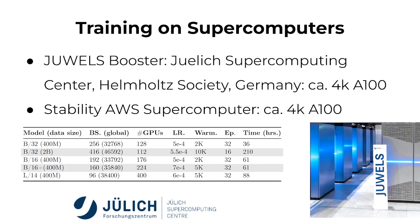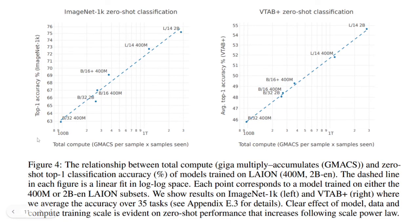We applied for access to Jülich's Booster supercomputer and the Stability AI supercomputer, and we trained several CLIP models. If you look at these scaling plots, the x-axis shows the total amount of compute on a logarithmic scale and the y-axis shows zero-shot capability — you can see a pretty clear linear trend on the log scale.